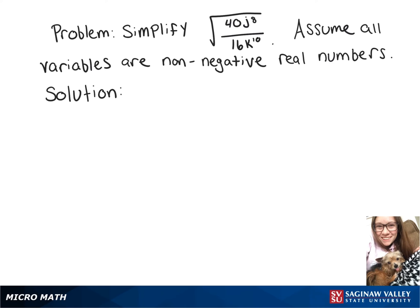We're going to simplify this expression, so let's start by breaking up our square root. We can rewrite this as the square root of 40 times the square root of j to the 8th over the square root of 16 times the square root of k to the 10th.